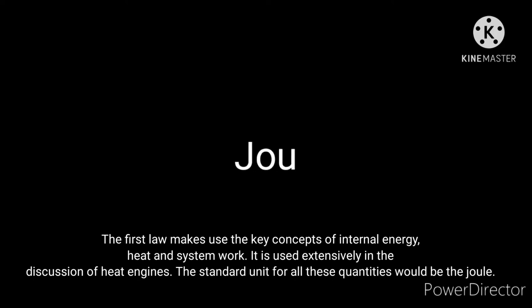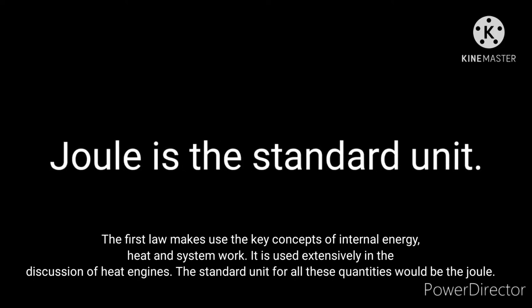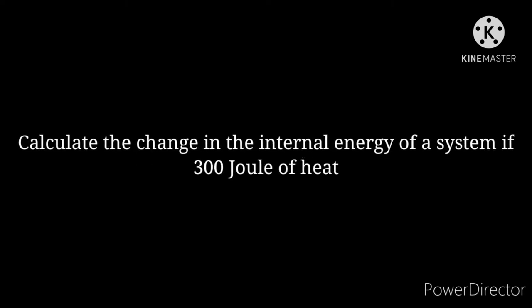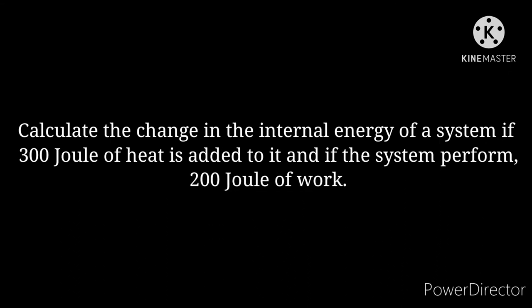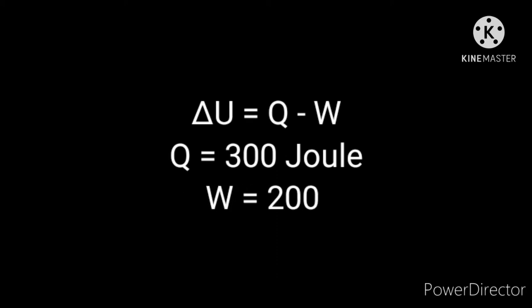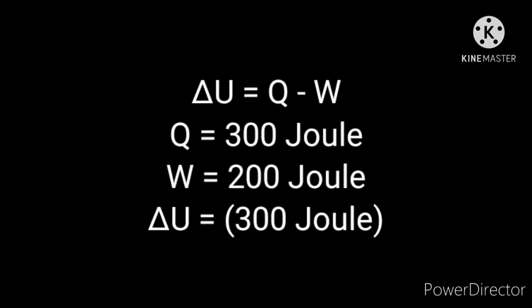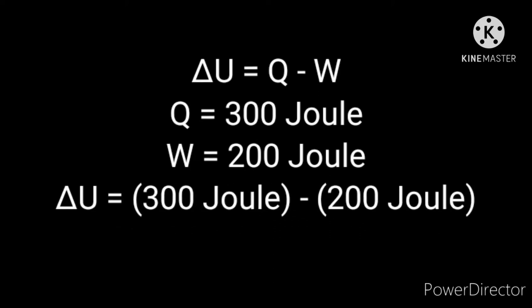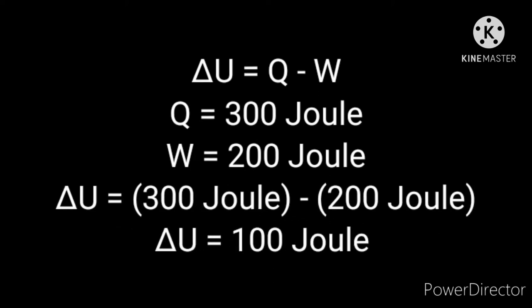The standard unit for all these quantities is the joule. Example: calculate the change in internal energy of a system if 300 joules of heat is added to it and the system performs 200 joules of work. Using the formula ΔU = Q − W, where Q = 300 J and W = 200 J, delta U equals 300 J minus 200 J, so the change in internal energy equals 100 joules.